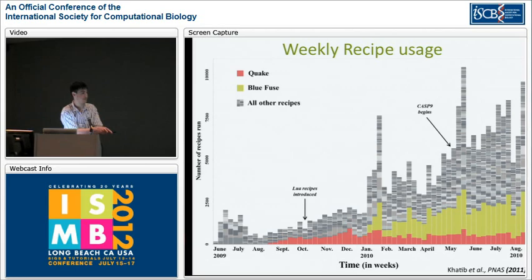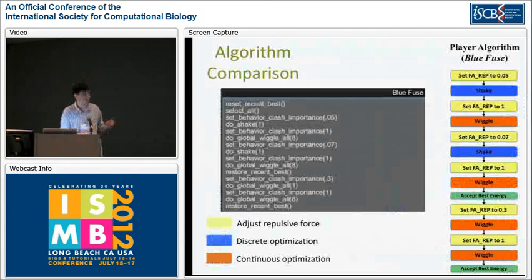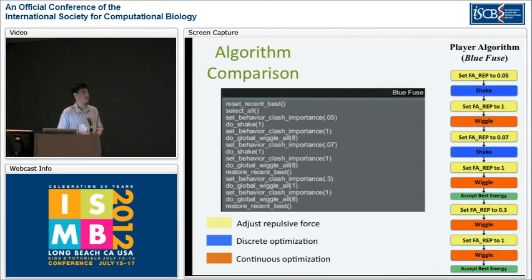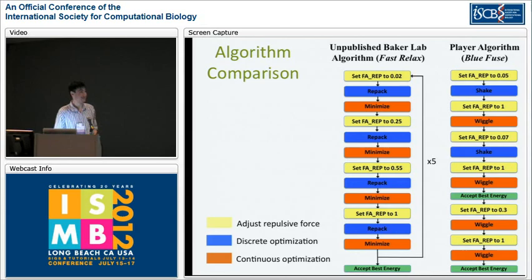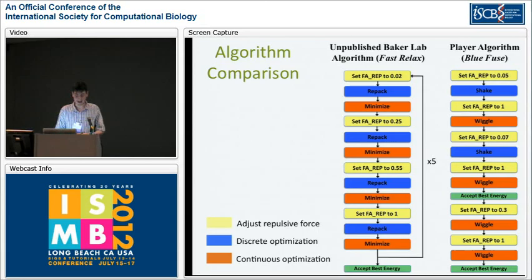These two recipes are also very similar to one another. Quake is written in the original cookbook format — just a visual block interface. BlueFuse is basically the Lua scripted version of that, and it's very simple. What's interesting is that during the exact same time the Foldit players were developing this recipe, our lab was working on its own unpublished algorithm called FastRelax, which was eerily similar to what the Foldit players came up with. Basically both algorithms ramp up the repulsive term while performing optimizations and then lower it again.